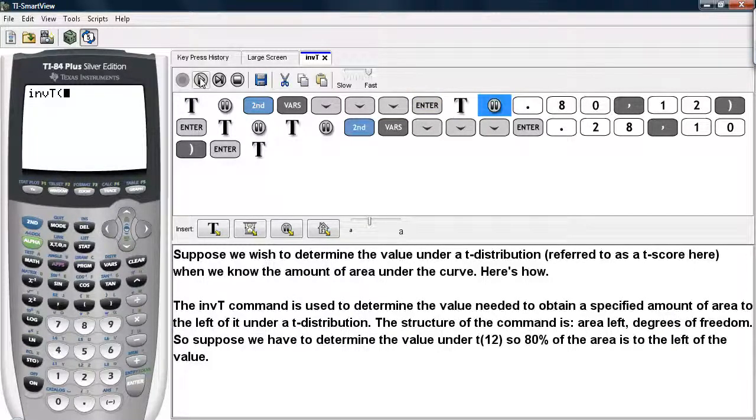this is the command that's used to determine the specified amount of area to the left under a t-distribution. The structure of the command is that you type in the area that you want to the left and the degrees of freedom.